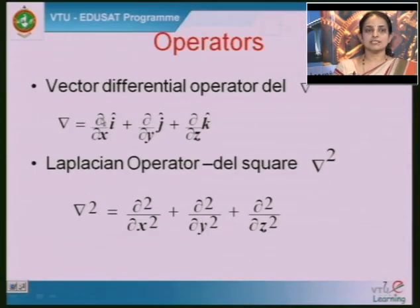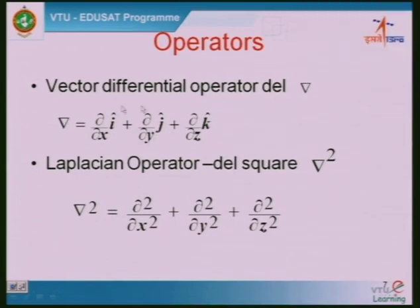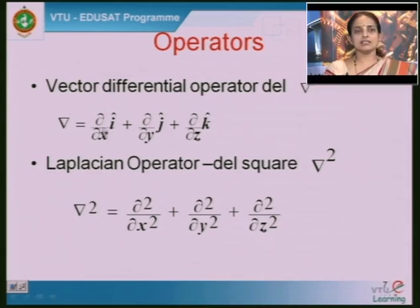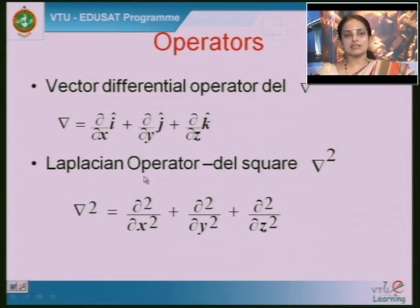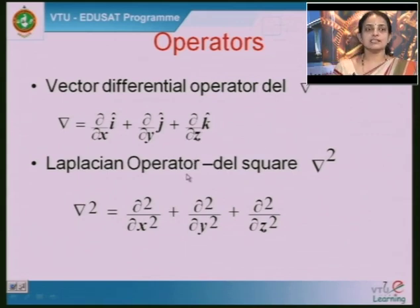We defined operators. The del or nabla operator is: ∇ = i(∂/∂x) + j(∂/∂y) + k(∂/∂z), where ∂/∂x, ∂/∂y, ∂/∂z are partial derivatives. The Laplace operator is ∇² = ∂²/∂x² + ∂²/∂y² + ∂²/∂z². These two are the important operators in vector calculus.